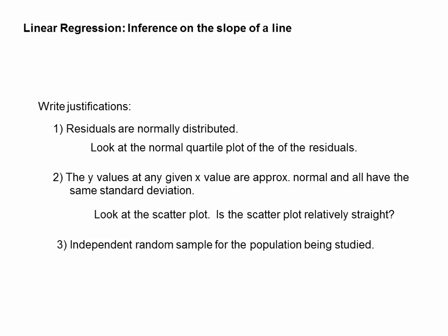Here again, you need to look at those four things. You can't have your data all clustered — it has to be spread out. When you look at your residual graph, it cannot have any type of pattern to it. When you look at a normal quartile plot, it should not have any outliers — you're looking for a normal distribution. You look at the scatter plot itself, and it needs to be relatively straight. And of course, just like before, it has to be independent and random. There's really four things we're looking for — don't forget the one about clustered data. We're not allowed to have a cluster of data and make a line through it, especially if it's clustered only on one end.